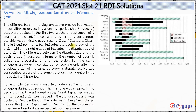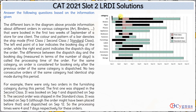The left endpoint of a bar indicates the booking day of the order, while the right endpoint indicates the dispatch day of the order. The difference between the dispatch day and the booking day is called the processing time. For example, if we consider this order, the order date is September 1st and the dispatch date is September 3rd.